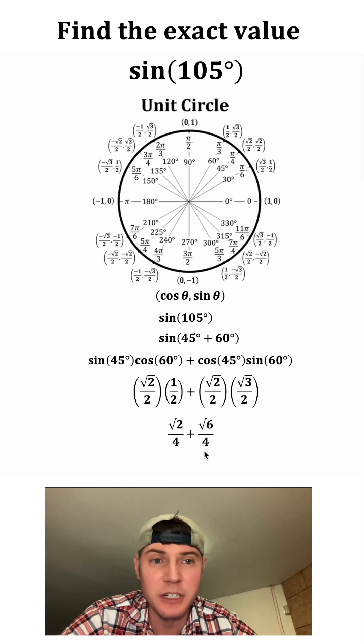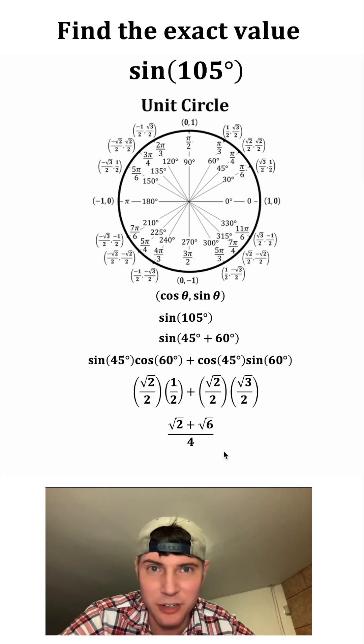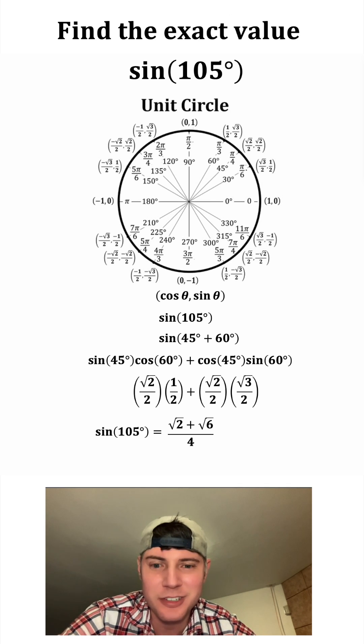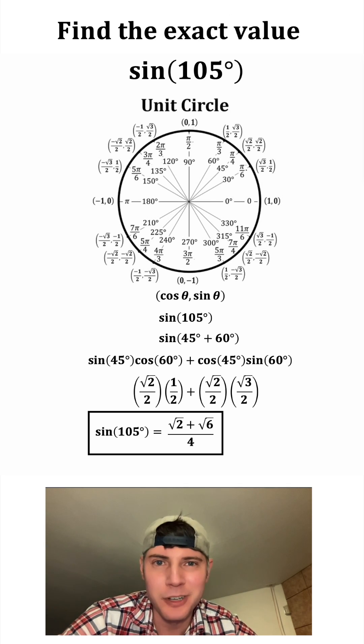So now we have two fractions with a common denominator. We can combine them into a single fraction. And this is the exact value for sine 105 degrees. Let's put a box around it. How exciting.